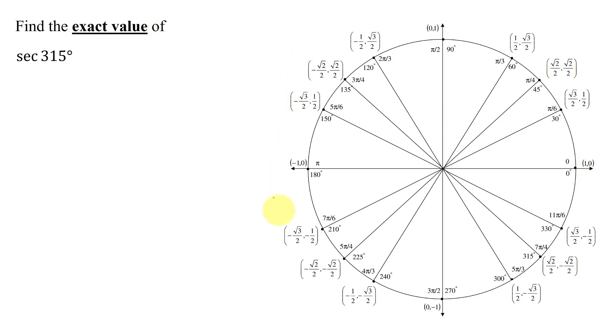We need to use the unit circle that's shown over here. And remember, for all these points on the unit circle, the x-coordinate is the cosine of that angle. The y-coordinate is the sine of that angle.